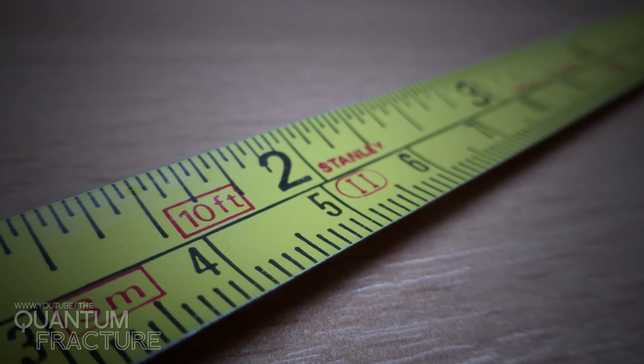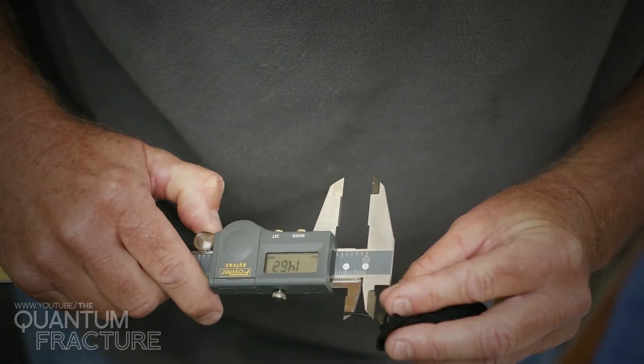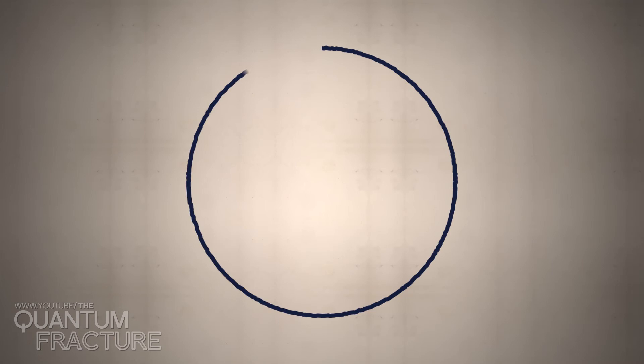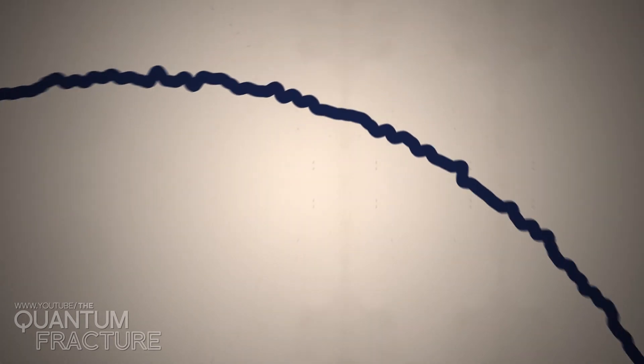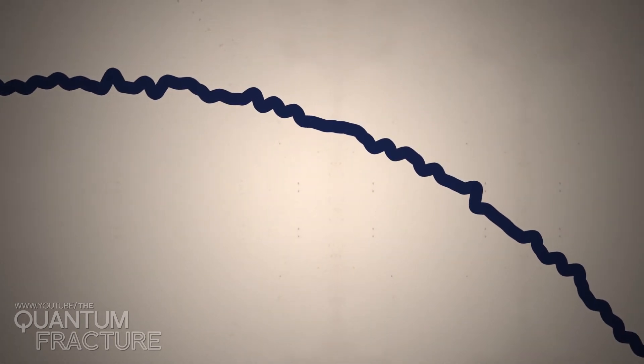Not only because measuring distances accurately is hard, also because every circumference that you draw or sculpt or model is going to be imperfect, even if its flaws are tiny.